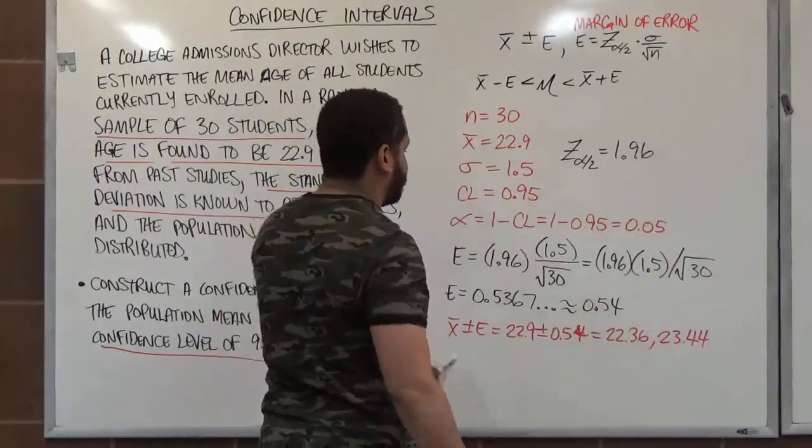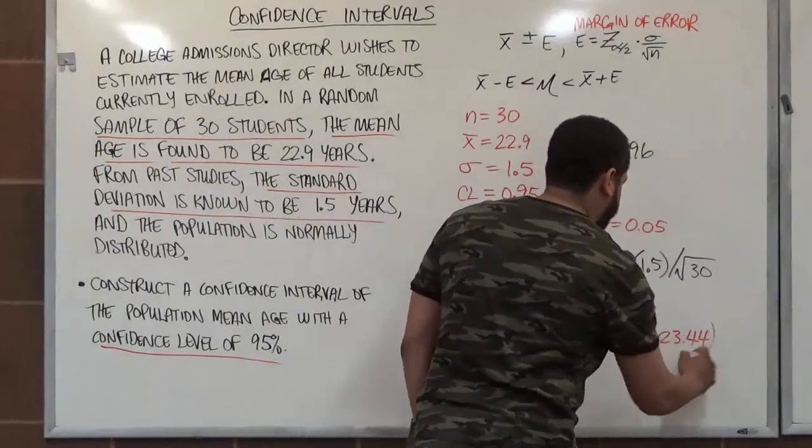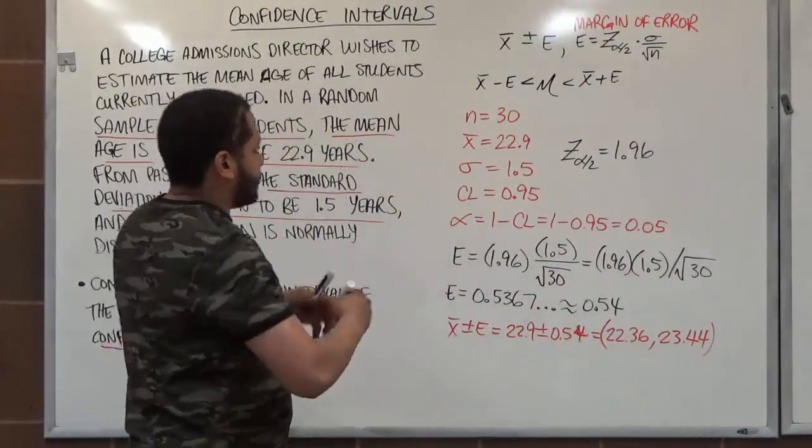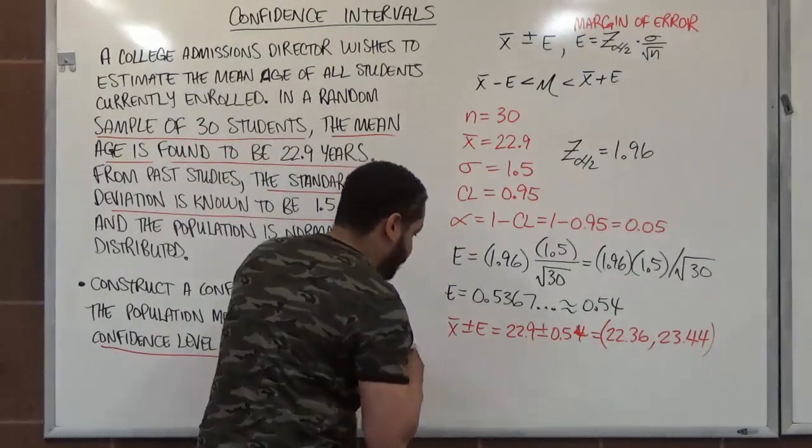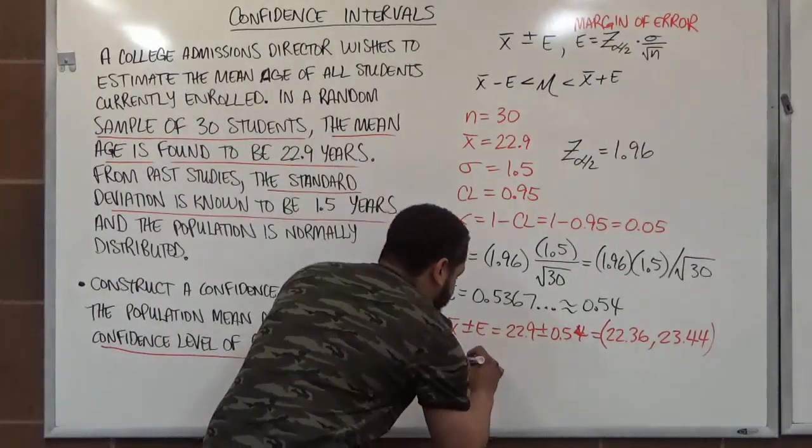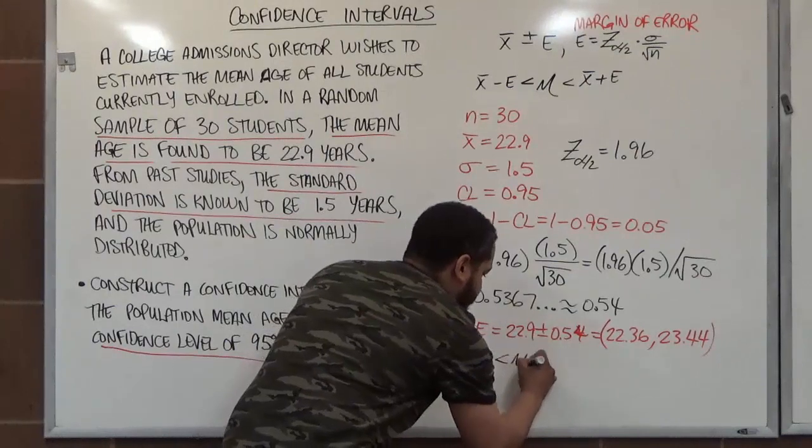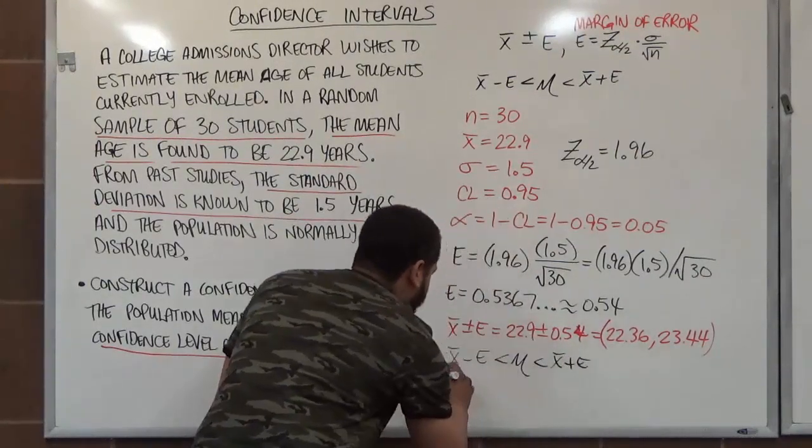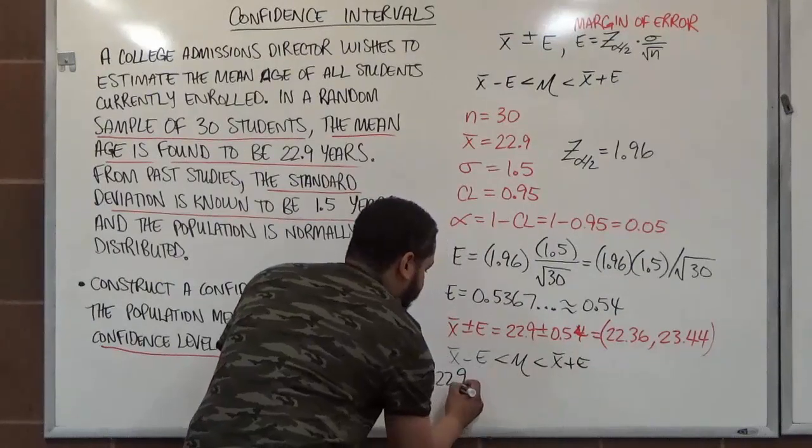So let me rewrite this in a different way. This is one way to calculate your confidence interval. So the other way is a little bit easier because it substitutes in perfectly. So our second version, we have x̄ minus e less than mu less than x̄ plus e. Our x̄ is 22.9, our best point estimate.